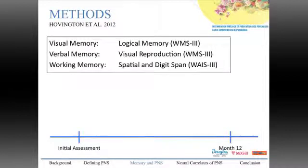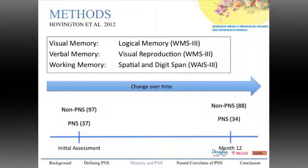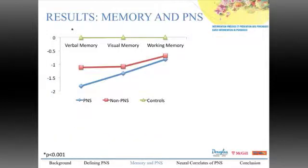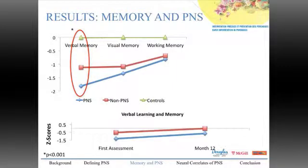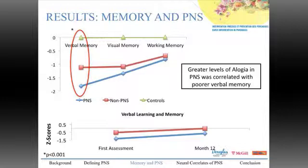At the initial assessment, we compared three groups: patients with persistent negative symptoms, those without, and healthy controls. For change over time, we compared the two patient groups. We found that only in the verbal memory domain was there a difference between those with and without persistent negative symptoms; the other two domains showed no difference between patient groups. Longitudinally, memory ability was stable over time with no change. Looking at individual SANS items, greater levels of alogia in the PNS group correlated with poorer verbal memory.